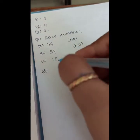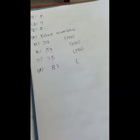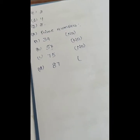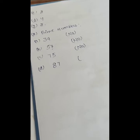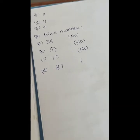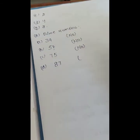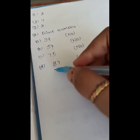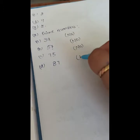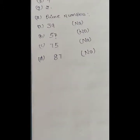For 87: 87 is divisible by 3 — 3 goes into 87 giving 29. So it is also not a prime number.